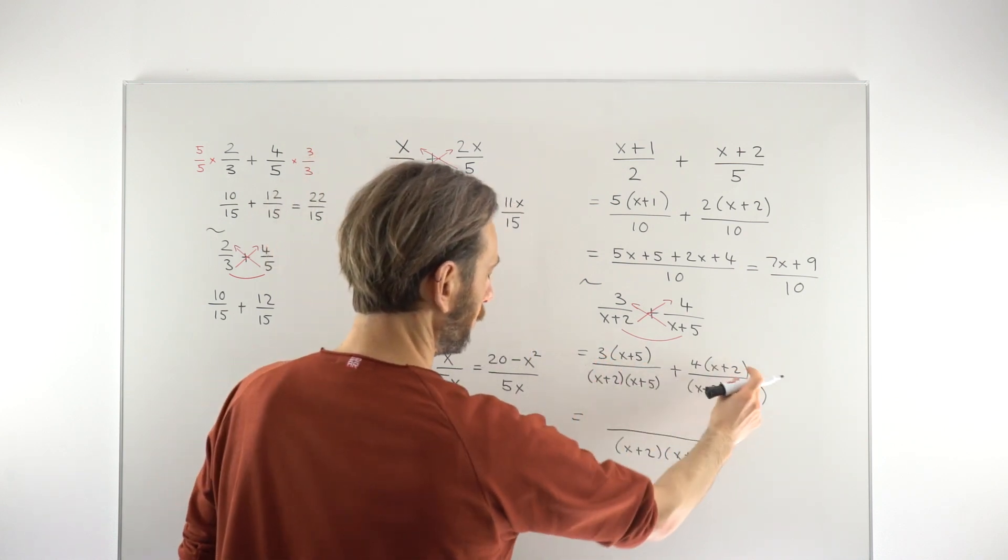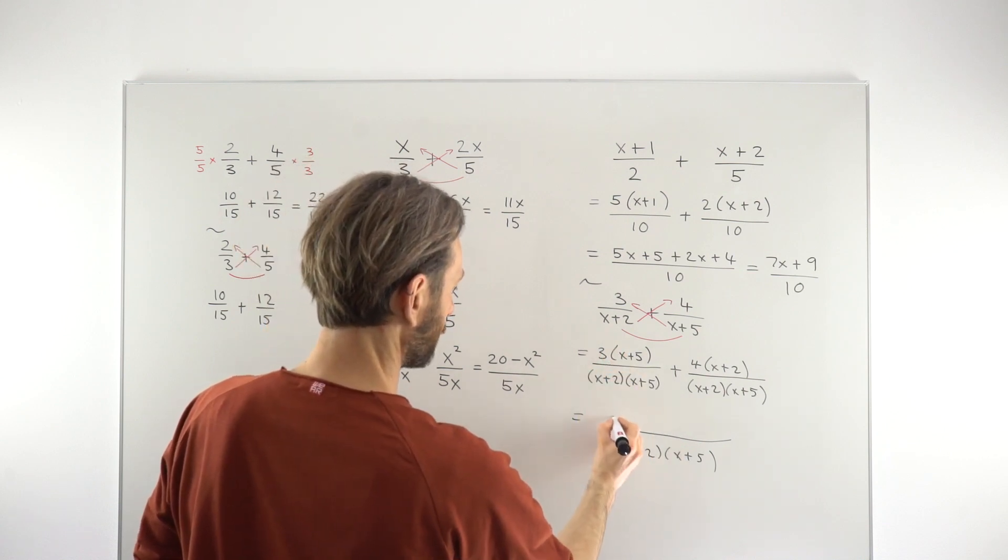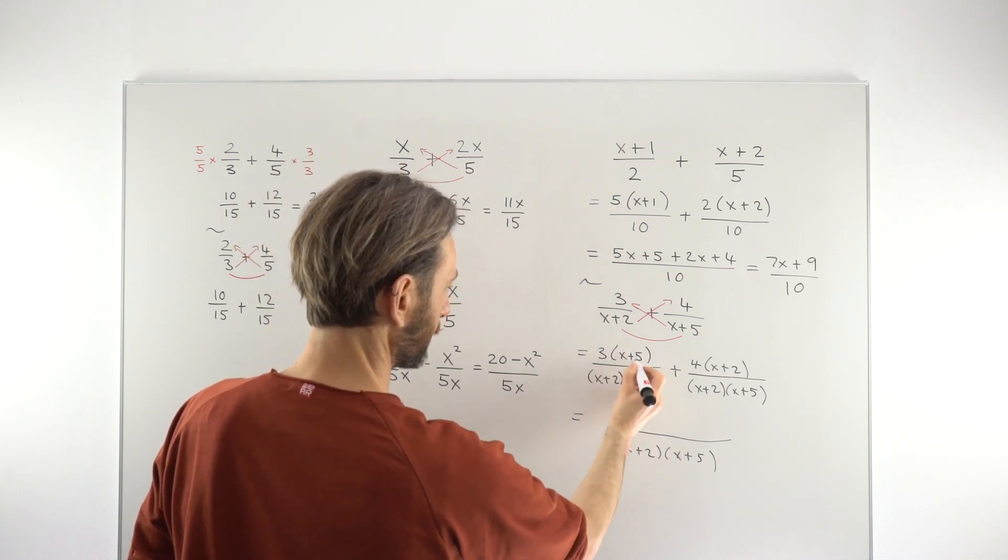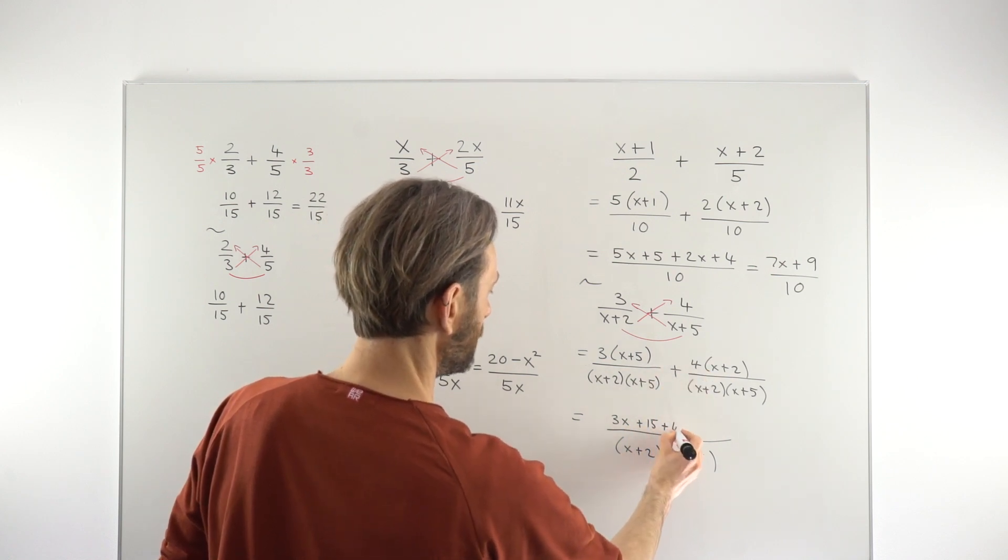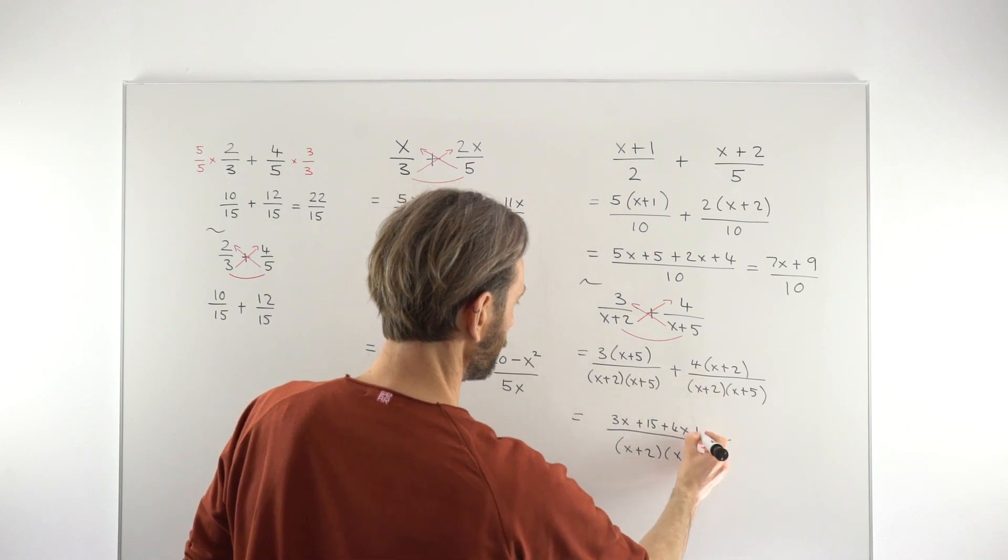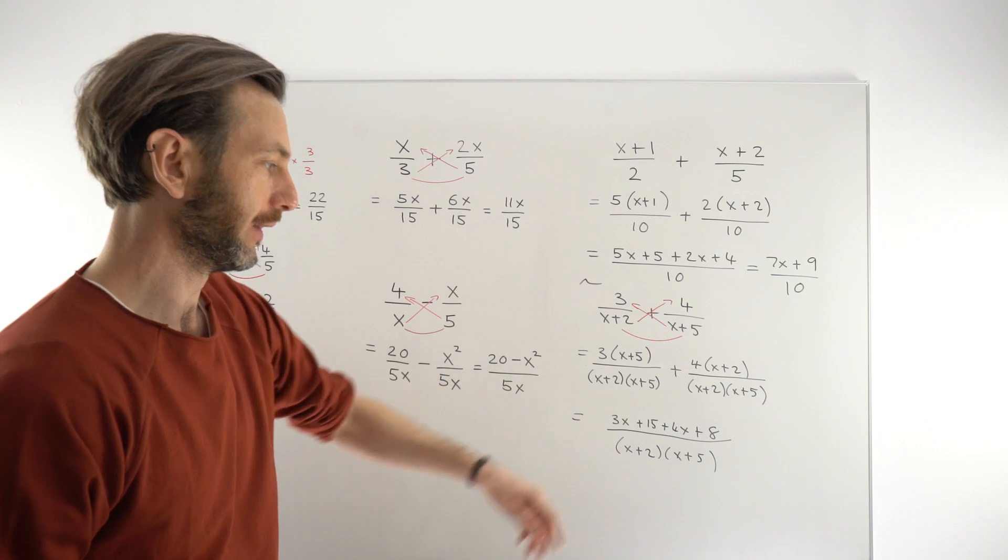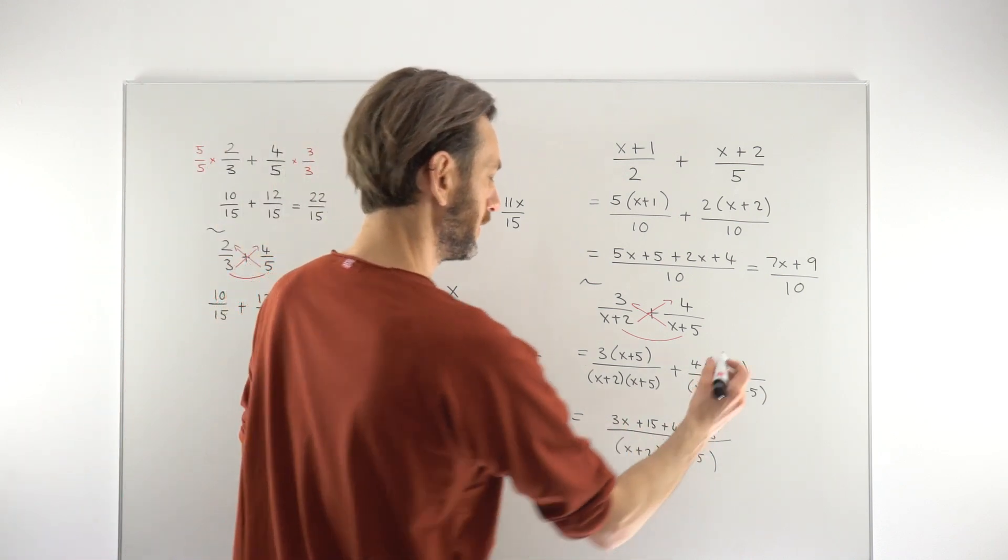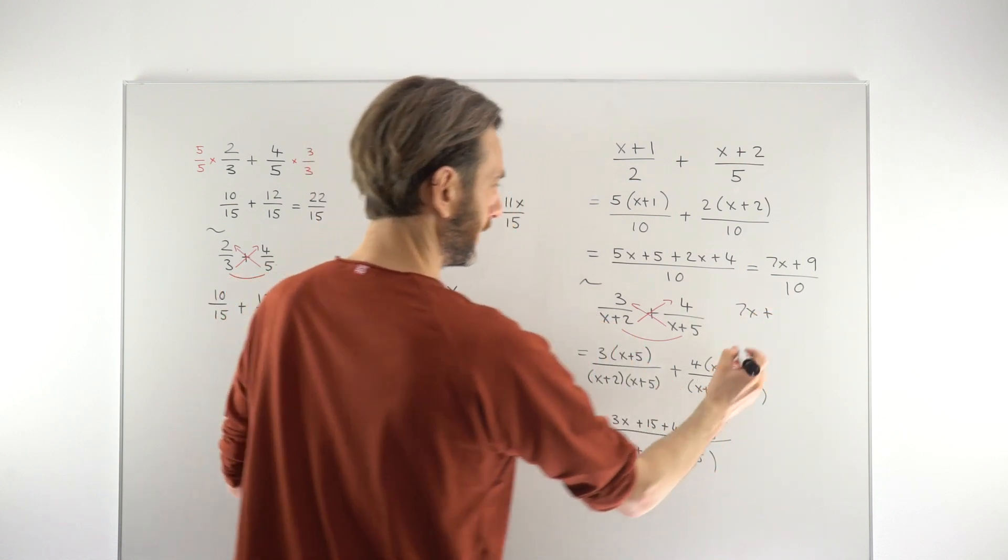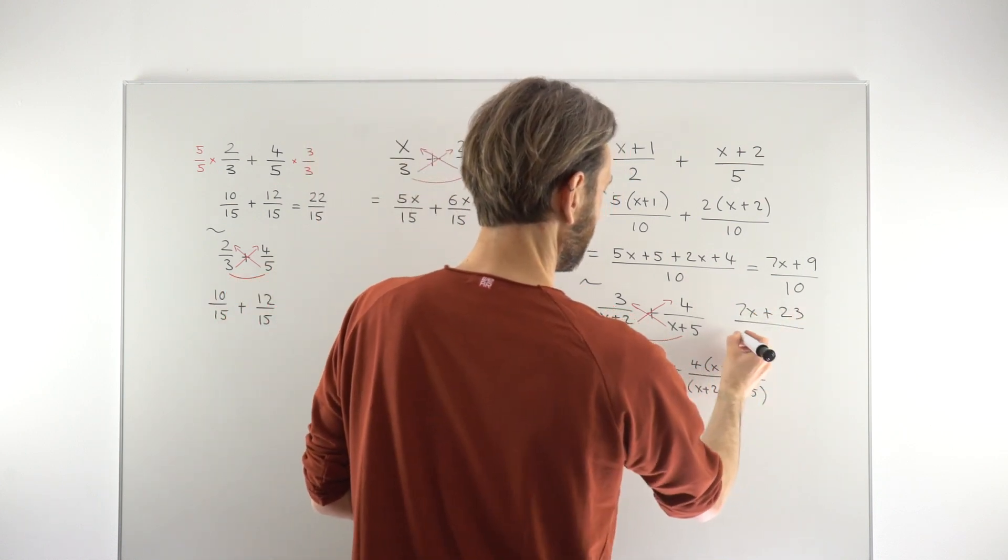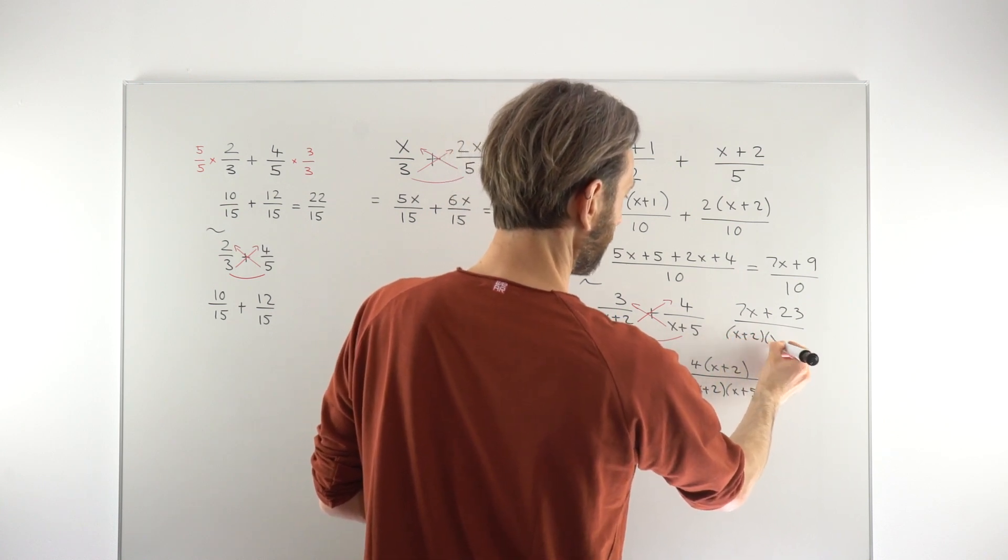So we're just going to go ahead and merge the fractions with one version of that denominator. And then we're going to combine these two and I'm going to multiply them out at the same time. So 3 times x to give 3x, 3 times 5 to give 15 plus 4 times x to give 4x and 4 times 2 to give 8. And then we would just finish that off by merging the like terms. So 3x plus 4x to give us 7x and then 15 plus 8 to give us 23.